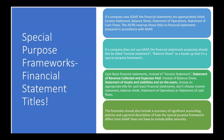If it's a special purpose framework, the footnotes in the financial statements should also include a summary of significant accounting policies and a general description of how the special purpose framework differs from GAAP. This general description does not need to include dollar amounts — it doesn't have to be quantified or include columns comparing GAAP numbers to cash basis numbers. Just a general description of how the special purpose framework differs from GAAP.